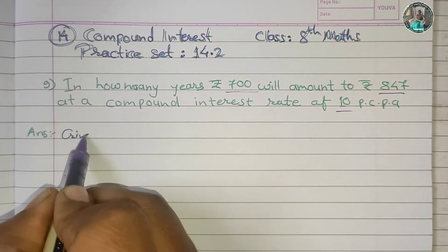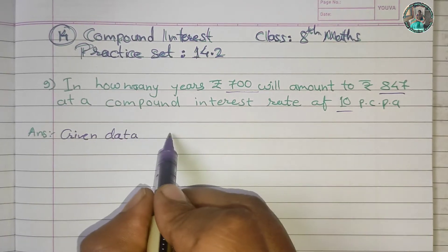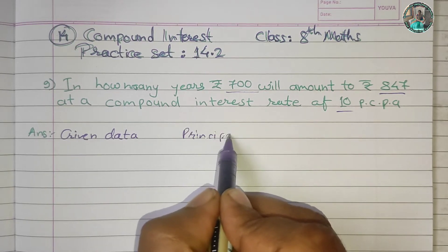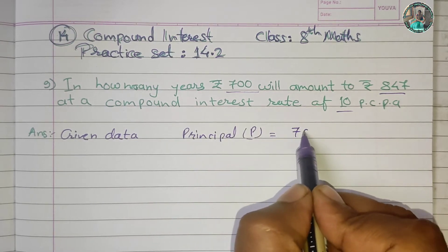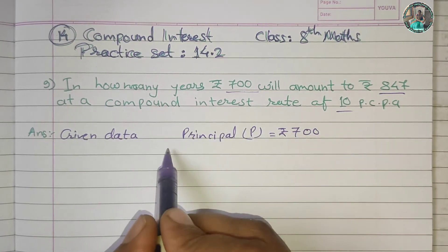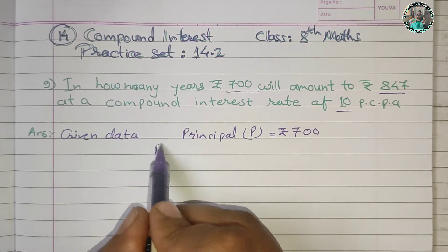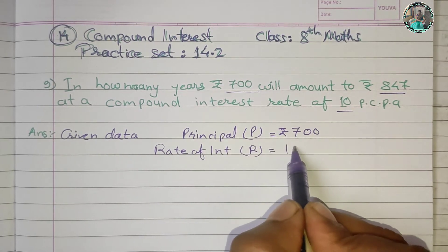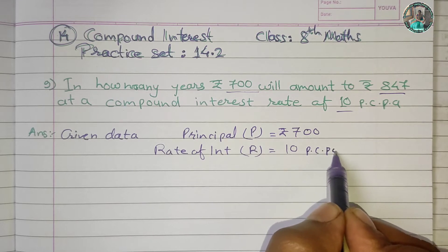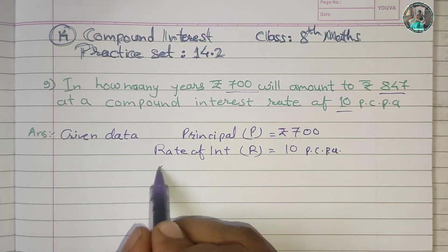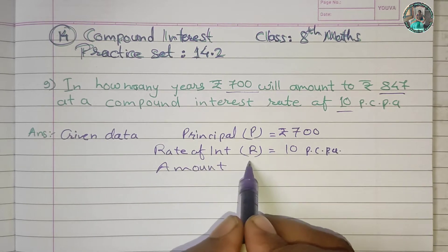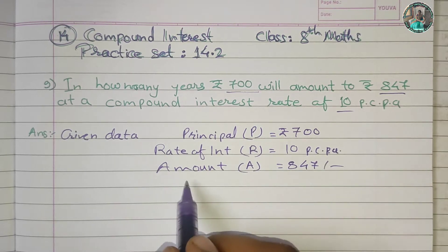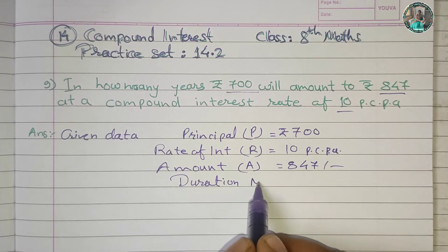Given data: Principal P = 700. Rate of interest R = 10% per annum. Amount A = 847. Duration N is to be found.